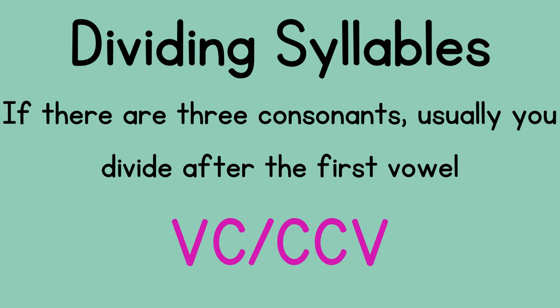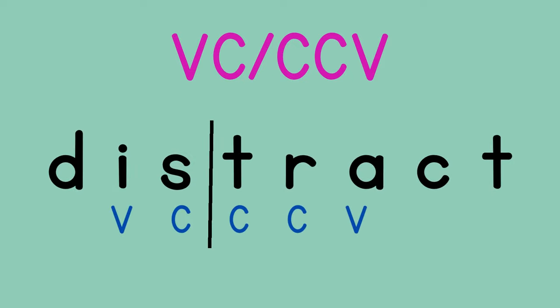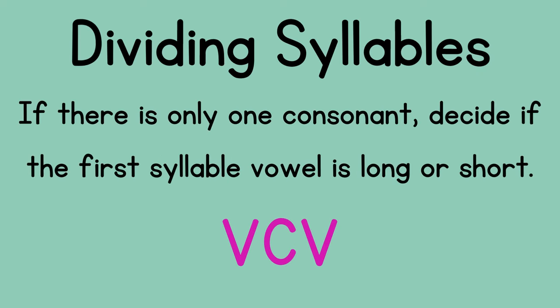Another helpful rule is if there are three consonants, usually you divide after the first one. So 'distract' has three consonants — S, T, and R — and you often divide after the first consonant, unless you see two letters that belong together, like S and H.